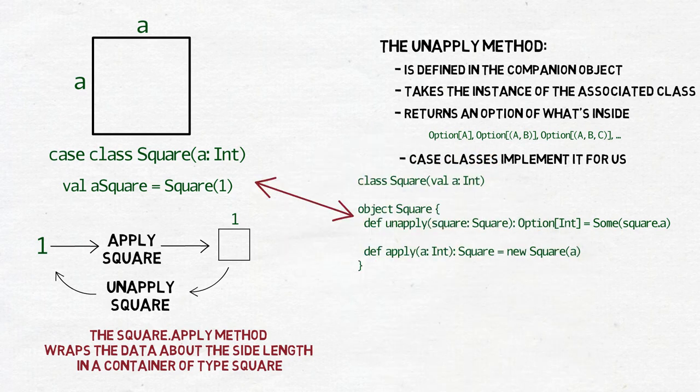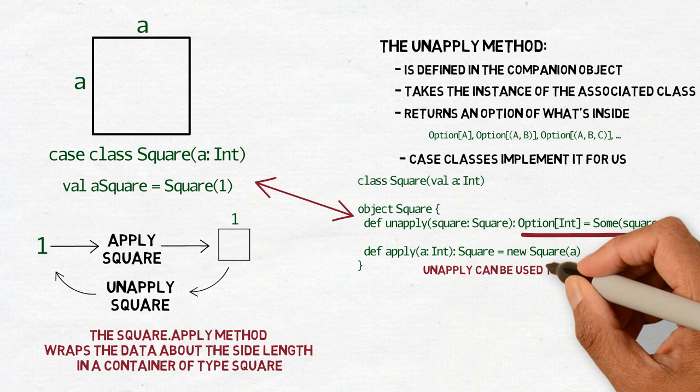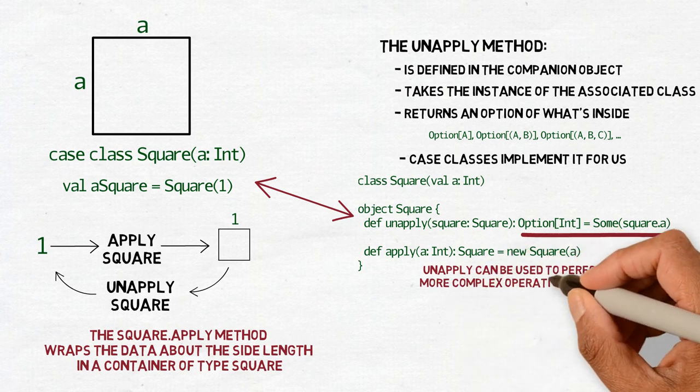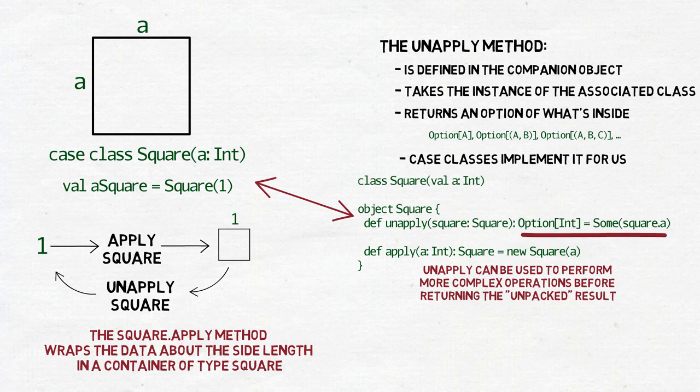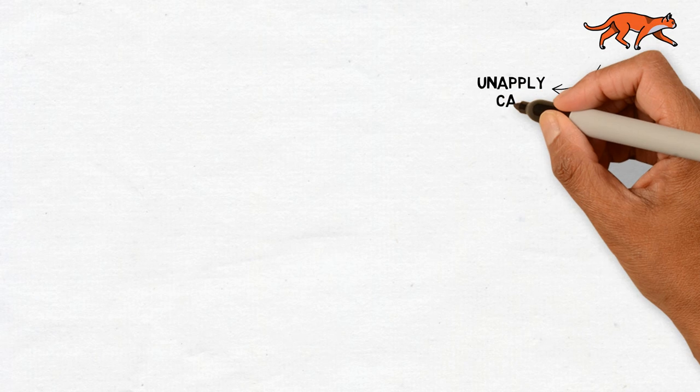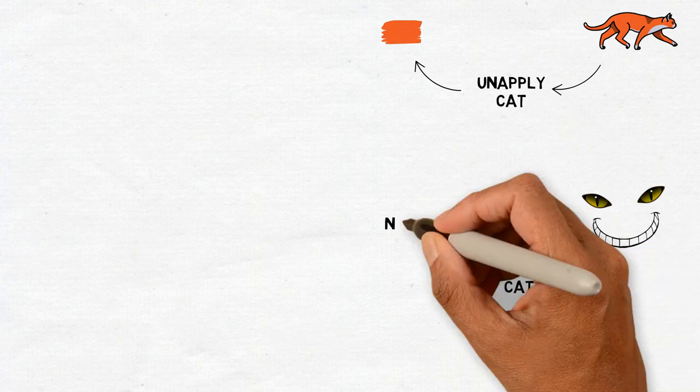The only thing which stands out is that the unapply method returns an option. Why? Because just like apply, unapply can be used to perform more complex operations before returning the unpacked result. And sometimes it can turn out that the expected result doesn't match what we get. Unfortunately, to provide an example I have to go back to cats. We can unapply an instance of real cats and get its color, but we can't do it for unreal cats, like the Cheshire one.